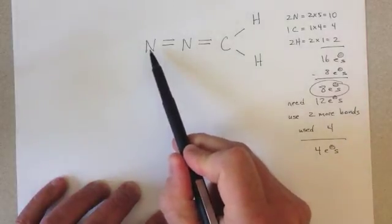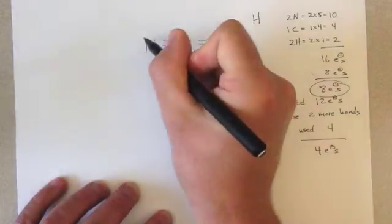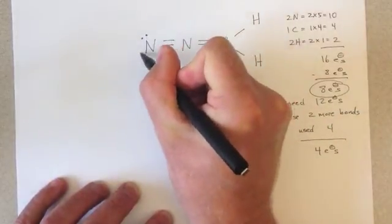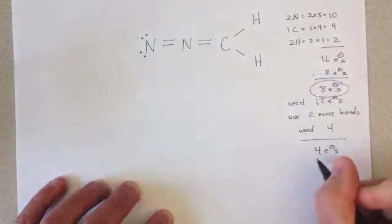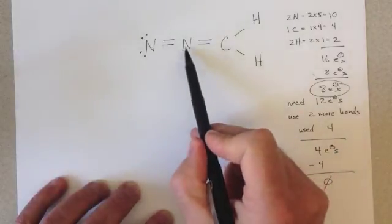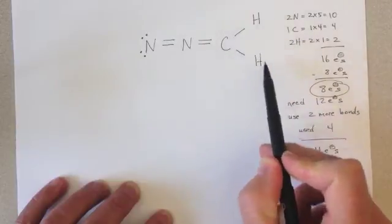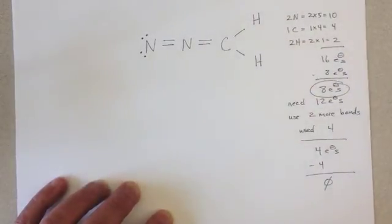So here we have this nitrogen. It has two, four electrons. It needs four more. I just used all my electrons. I'm down to zero. So hopefully everyone else is happy. This nitrogen has an octet. This carbon has an octet. Hydrogens are fine. This is a legitimate resonance structure for this molecule.